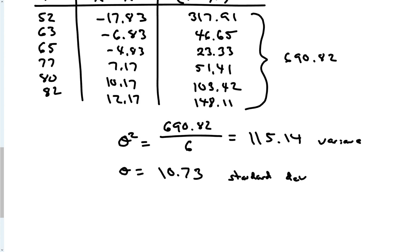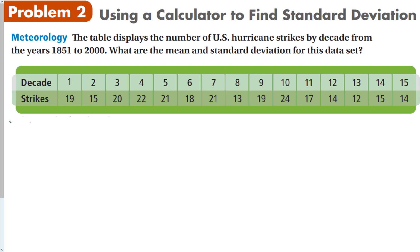That's a lot to do. Look at this data table with 15 different data points. This table displays the number of U.S. hurricane strikes by decade from 1851 to 2000.